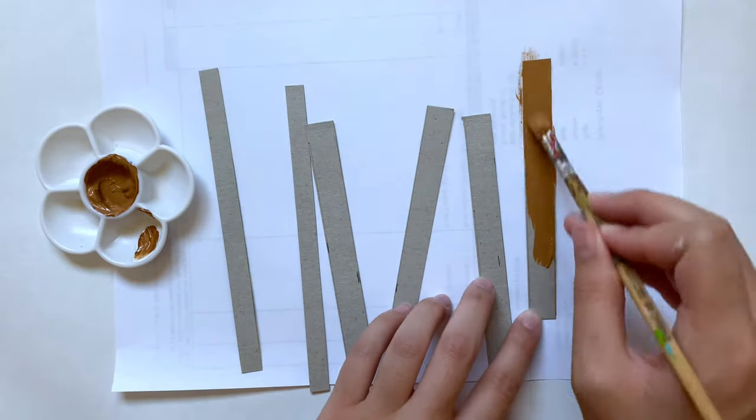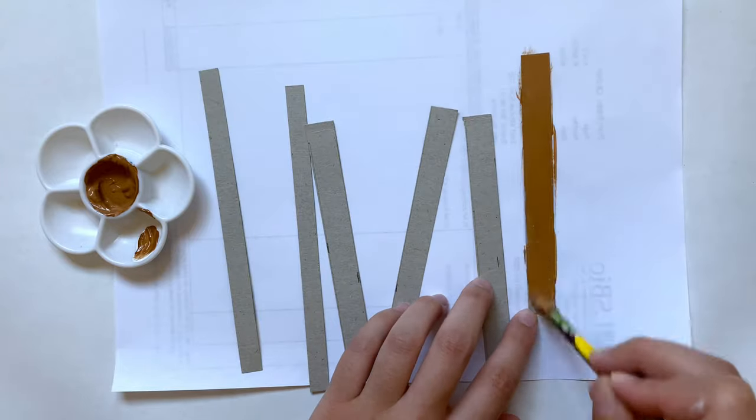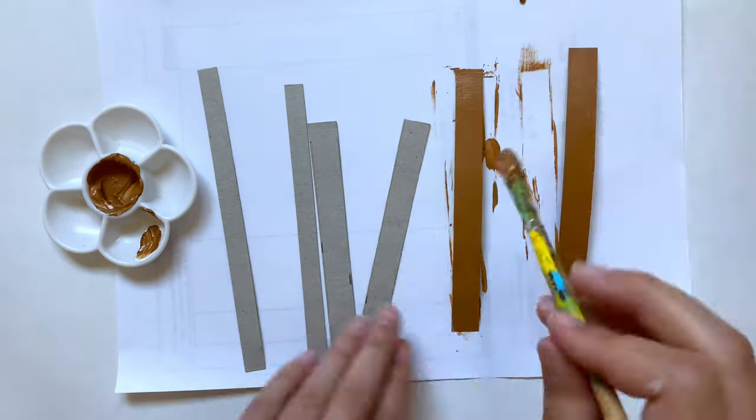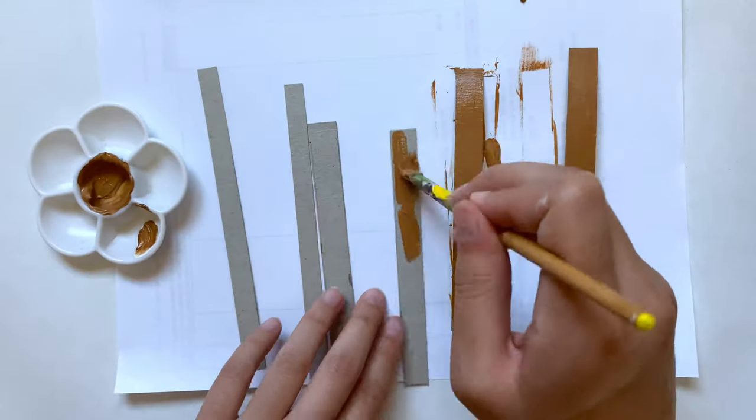Now I mixed up some tan paint and I'm just going to be painting all these strips. You can do whatever color you want, but when I think of sandals I think of this kind of tan leather color, so that's what I'm doing.